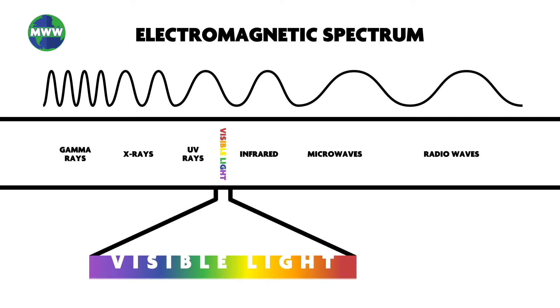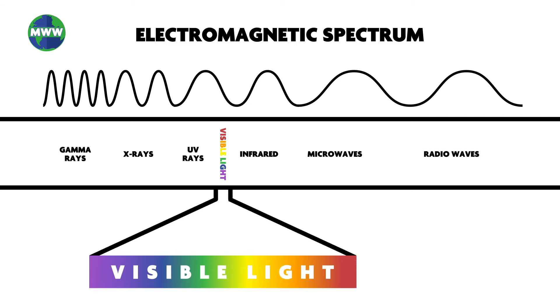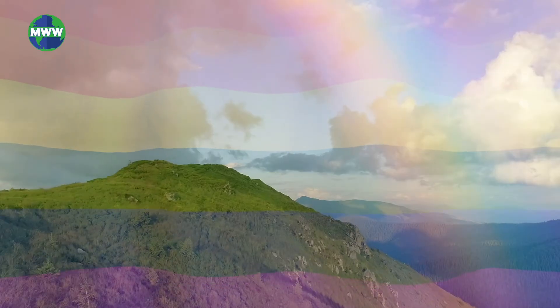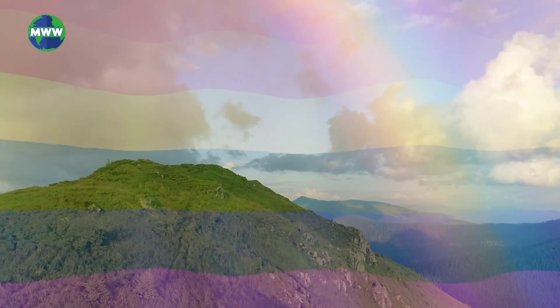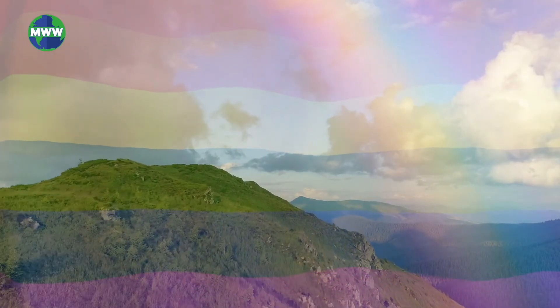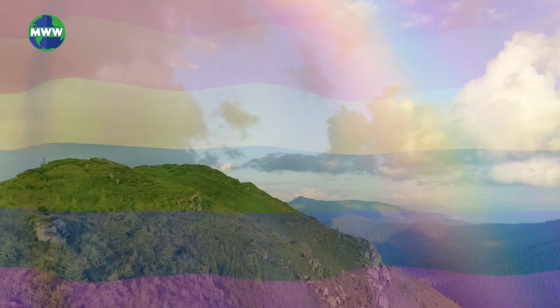The visible light spectrum is what we can see with our eyes, which includes all the colors of the rainbow: red, orange, yellow, green, blue, indigo, violet, and everything in between.